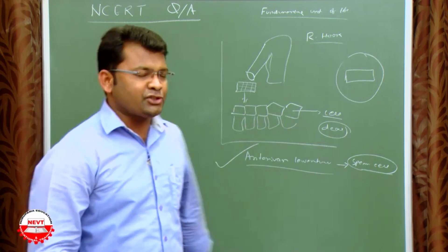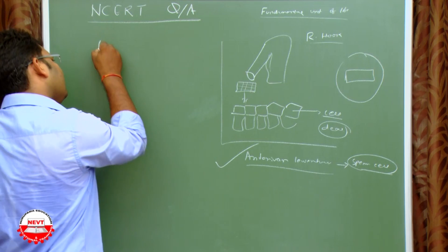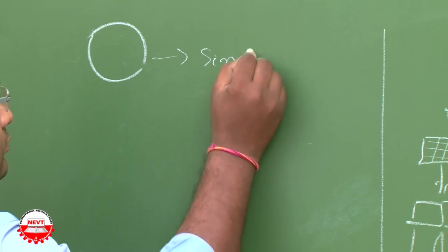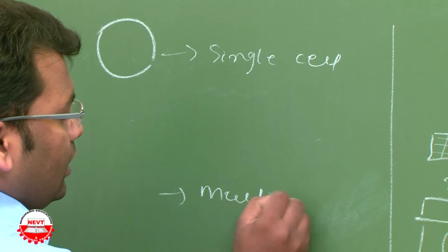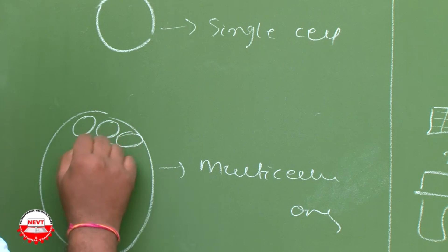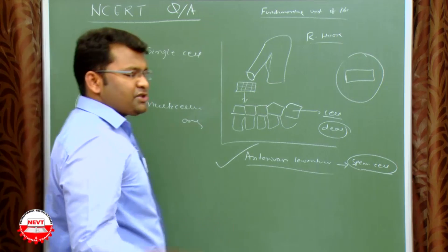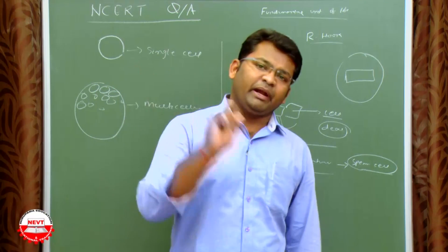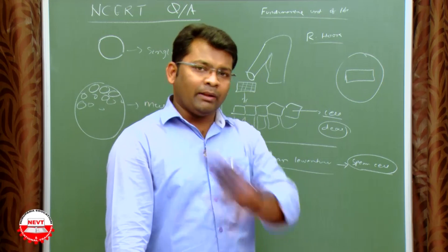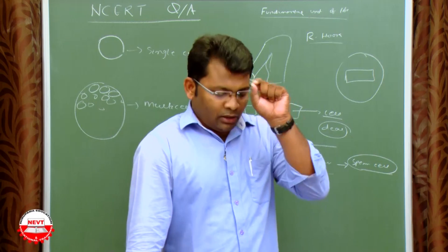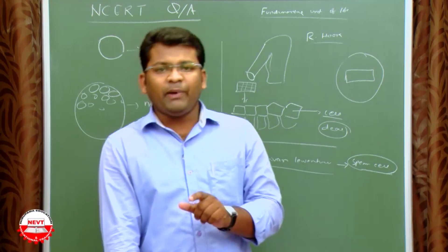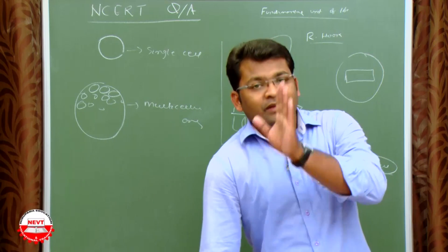There are two parts here — structural and functional. An organism can make its own structures using a single cell (unicellular organism) or a group of cells (multicellular organism). The ultimate reason is: without the cell, the organism cannot survive. That's why the cell is called the structural unit of an organism.